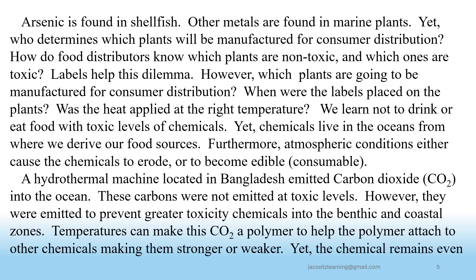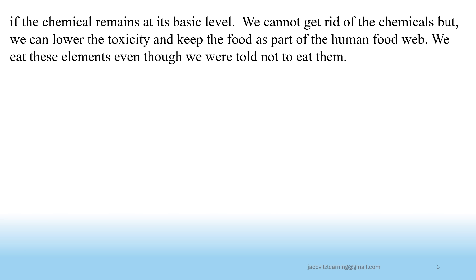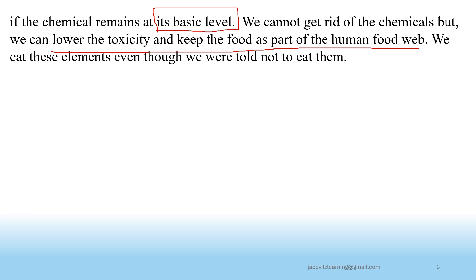The chemical remains even if the chemical remains at its basic level. We cannot get rid of chemicals, but we can lower the toxicity and keep the food as a part of the human food web. We eat these elements even though we were told not to eat them.